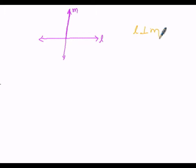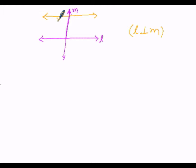In the second case, M is perpendicular to N. So M and N are perpendicular — they are at right angles. Similarly, M and L are perpendicular — they are at right angles.